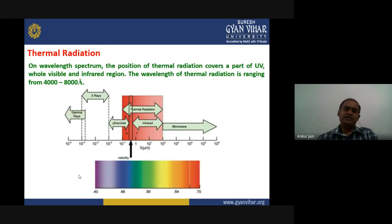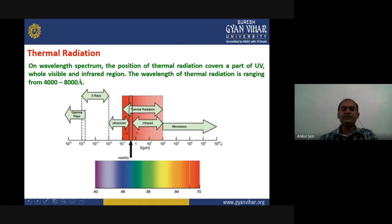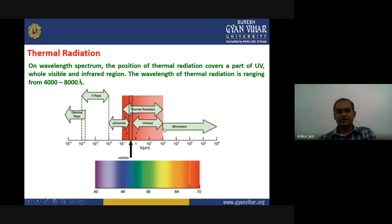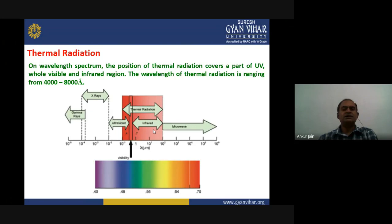Since thermal radiation is an electromagnetic wave, it should have a place on the wavelength spectrum. Looking at the wavelength spectrum, thermal radiation is shown by the red-pink color area. It covers some part of the ultraviolet region up to the infrared region completely, with the visible region in between. The wavelength of thermal radiation lies between 4,000 to 8,000 angstroms.